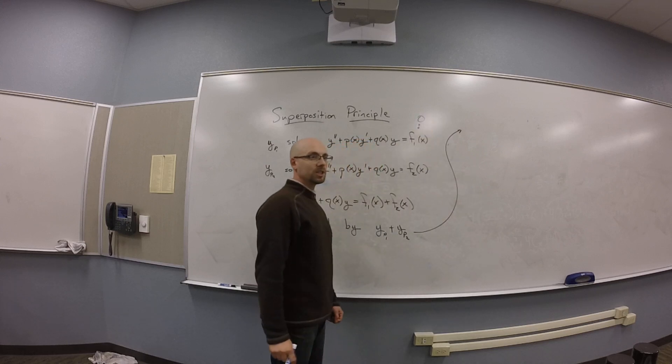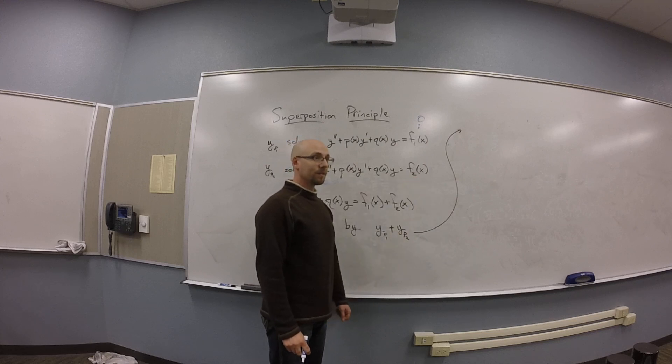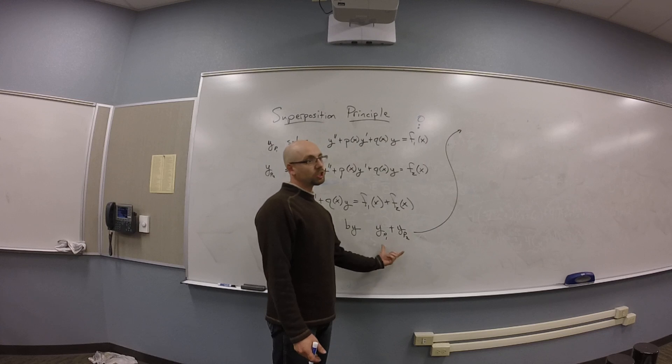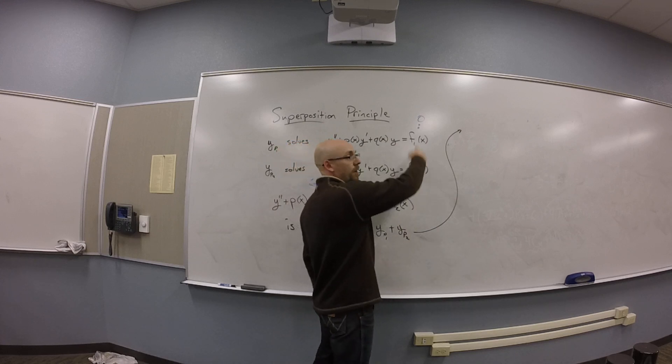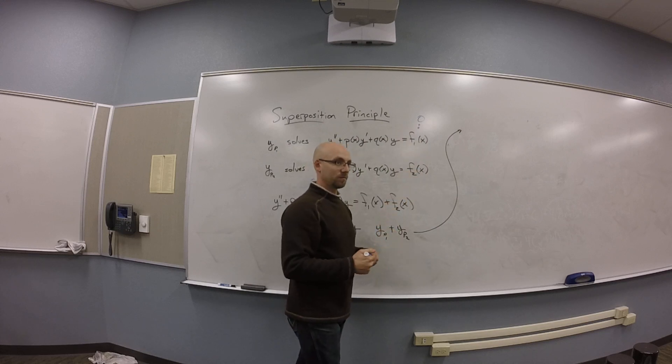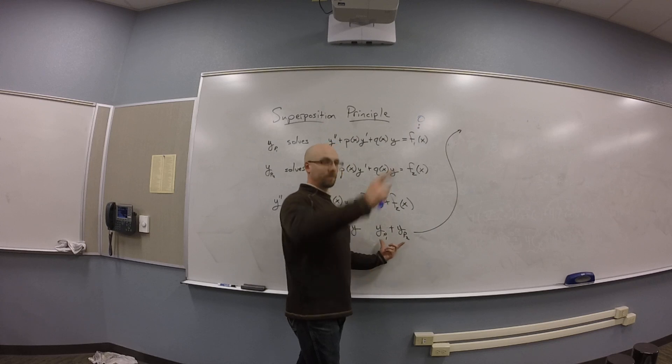Usually I have f1 as 0, right, and f2 is f, and then I have the homogeneous solution and the particular solution. You guys see that? That's basically what this thing is. This is just a little ramped up, saying it would work if you had two particular solutions, you could add them together. So, say these are actually particular solutions, and then we solve the f1(x) plus f2(x).